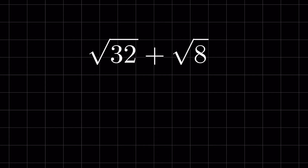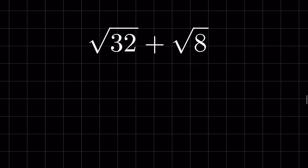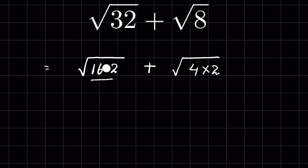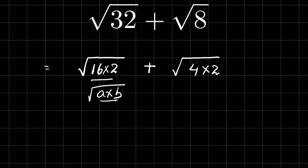Square root of 32 plus square root of 8 — how to add these radicals. Let's first simplify the radicals. Square root of 32 can be written as 16 times 2, and square root of 8 can be written as 4 times 2. It is in the form of a times b under a square root, which we can write as square root of a times square root of b.